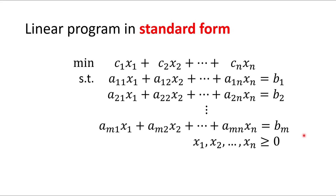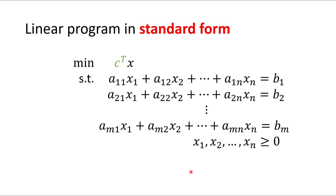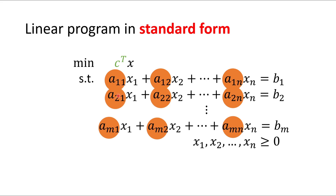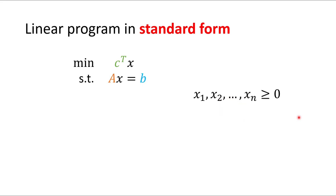This is a lot of notation, so people often write it more compactly. The coefficients c1 through cn of the objective function are written as a vector c, and the objective function becomes c-transposed times x. The constraint coefficients are written into a matrix A, the right-hand sides into a vector b, so the constraints become Ax = b. The non-negativity constraints are written as x ≥ 0.